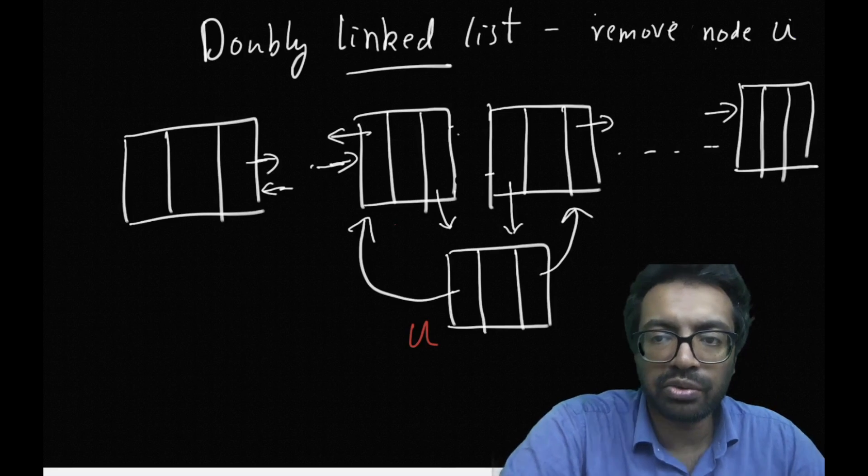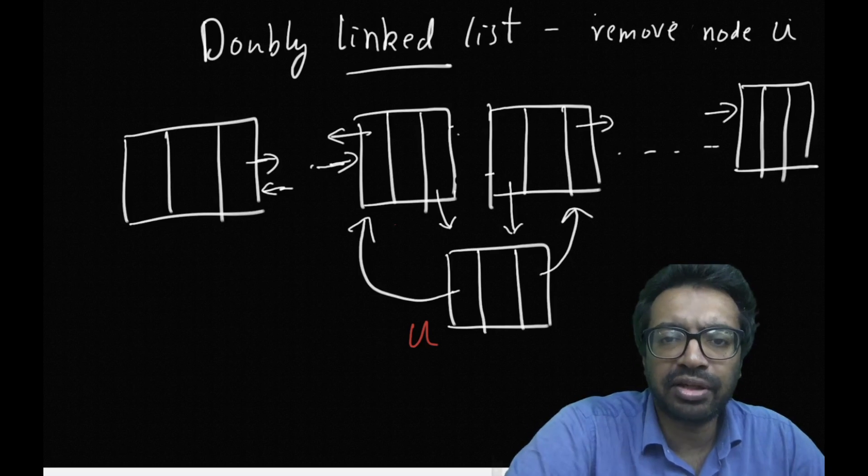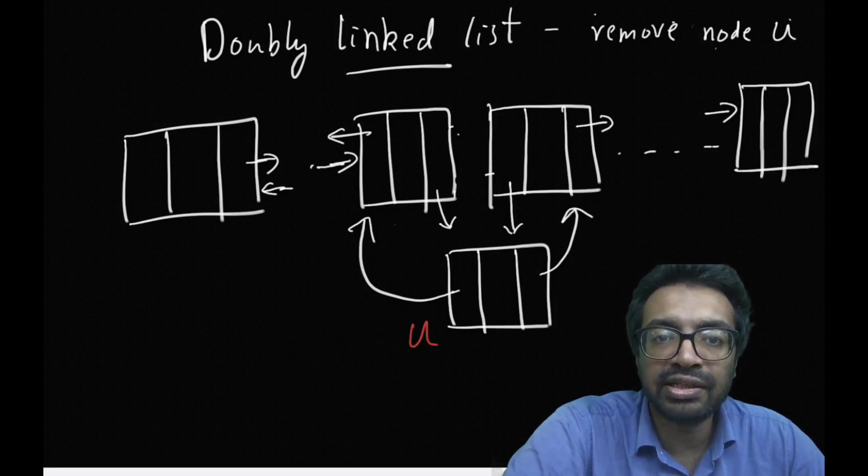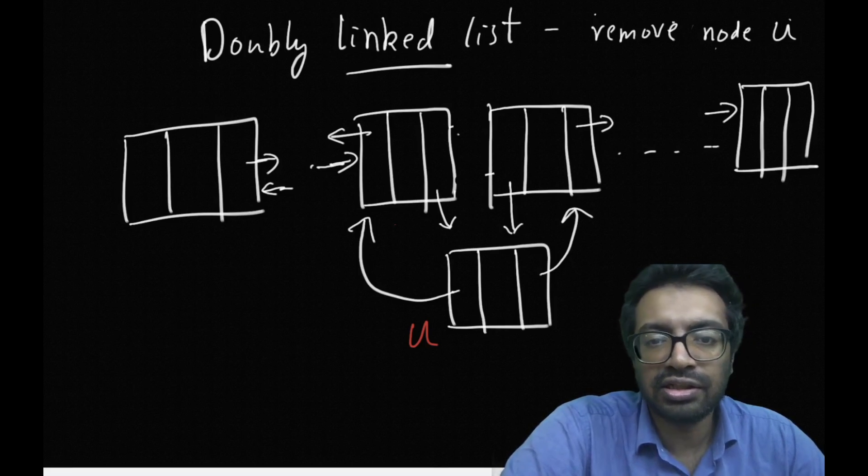The next question I want to ask is I want to remove this node U. This is something which wouldn't have been possible easily in a singly linked list. Easily in the sense not in constant time, but we are going to show that given this node U it's possible to remove this node U in constant time in a doubly linked list.